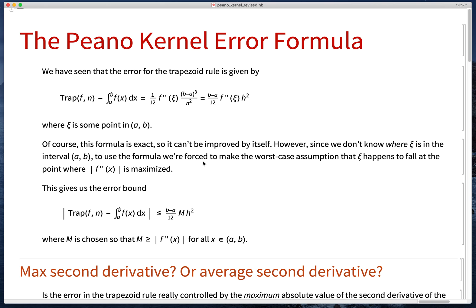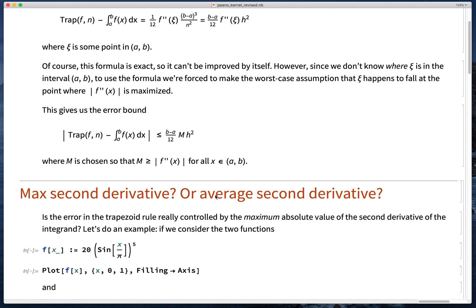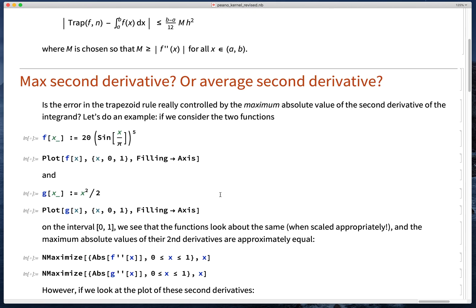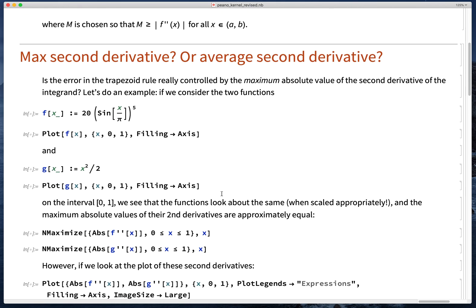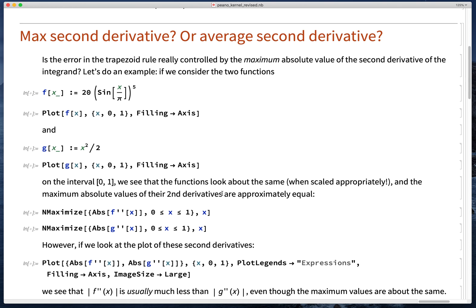But what if it only curves a lot in one place and everywhere else it's pretty close to flat? So we might wonder whether the error is really controlled by the maximum value of the second derivative or the average value of the second derivative.